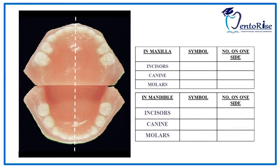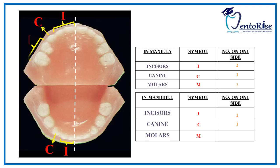Likewise, for the primary dentition, incisors are represented by I, canines by C, and molars by M. On one side, 2 incisors are present in the maxilla and 2 in the mandible, 1 canine is present in the maxilla and 1 in the mandible, and 2 molars are present in the maxilla and 2 in the mandible. The formula is written in the same way we discussed for the permanent dentition.